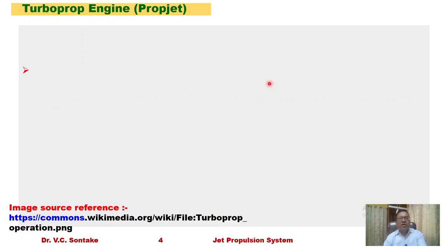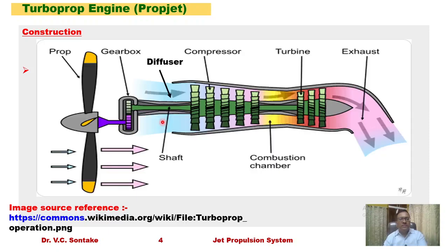Let us discuss about the turboprop engine, also called as prop jet engine. The construction of the turboprop engine is shown in the figure. It consists of a propeller gearbox where a reduction gearing arrangement is used to reduce the high speed of the turbine to the lower speed suitable to operate the propeller efficiently. There is a shaft connected to the compressor and turbine stages, then diffuser, compressor stages, combustion chamber, turbine stages, and propelling or exhaust nozzle — all covered by ducting.